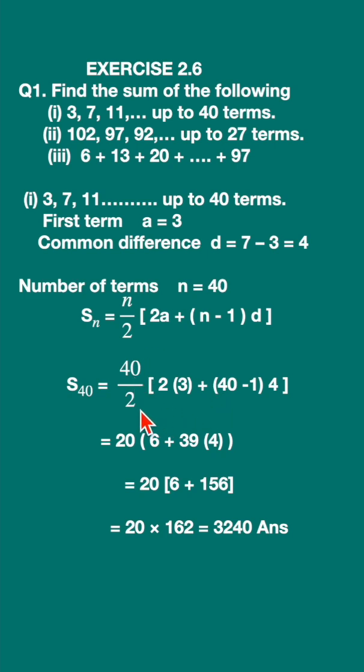Let us substitute these values and simplify it. 40 minus 1 is 39, 39 into 4 is 156, 2 into 3 is 6. Add up this and multiply, you will get 3240.